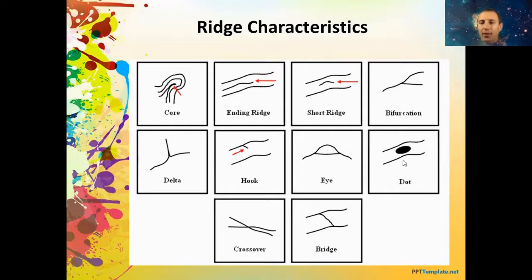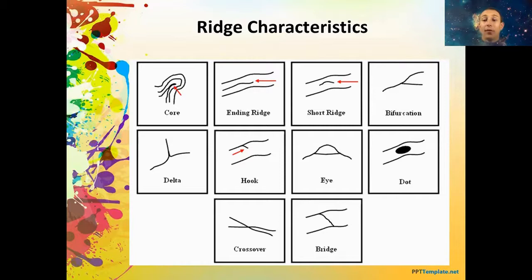Then we have a dot — a dot is basically just a speck, a point where that ridge comes together. One key difference people mix up is the short ridge with the dot: the dot is going to be pretty circular, meaning it needs to be about the same length as the width. If it's any longer than it is wide, chances are it's going to be a short ridge. A crossover should be pretty self-explanatory — it's where two ridges cross each other. And then a bridge is where you have basically two parallel ridge patterns with a line that intersects both of them.